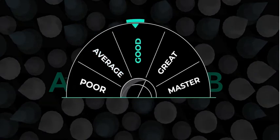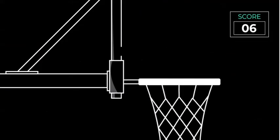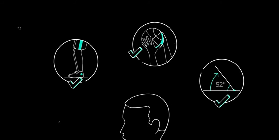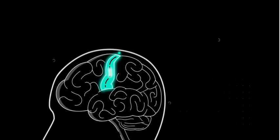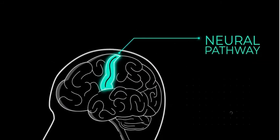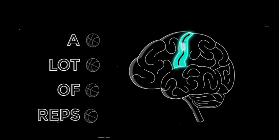You're starting to get pretty good now. You're making more free throws than not. You don't have to think about the mechanics as much. That's because the pathway gets stronger after each practice rep, and you've done a lot of reps.